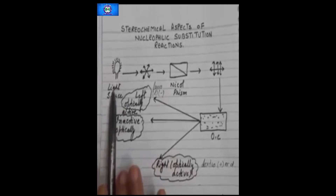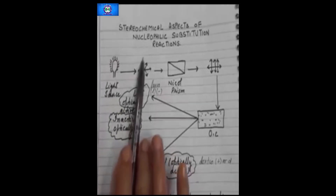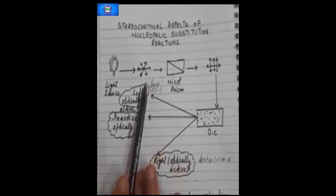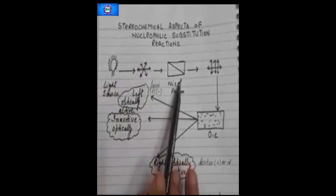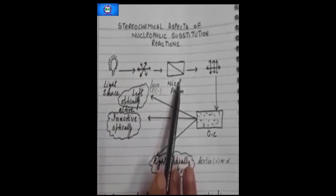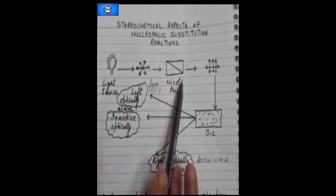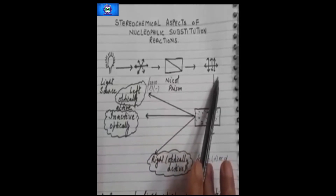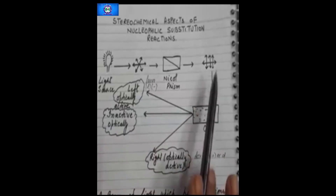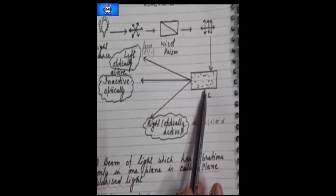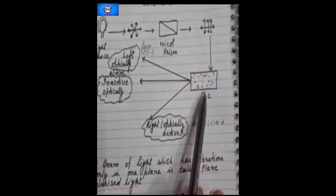— as shown in this diagram, there is a light source and the different waves are oscillating or vibrating in different planes. This light is passed through a special type of prism known as the Nicole prism. When the light comes out of it, it has oscillations or vibrations only in one plane, and this light is known as plane polarized light.